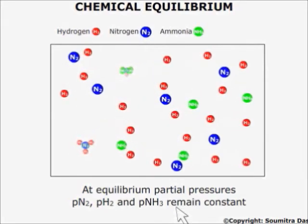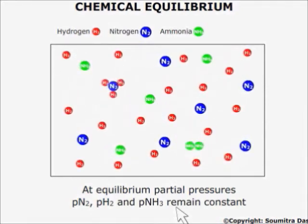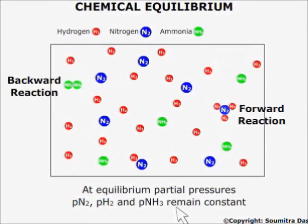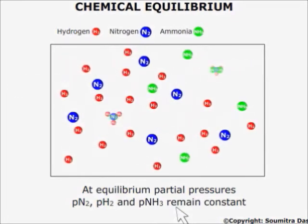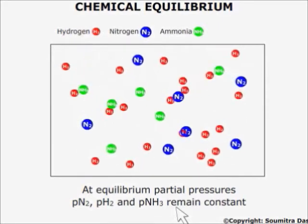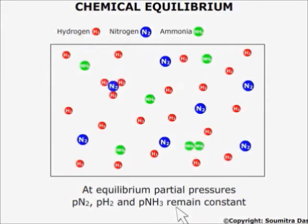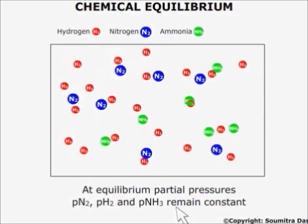But the reaction does not actually stop. What happens is that both the forward and backward reaction take place at the same speed. As soon as one molecule of nitrogen reacts with three molecules of hydrogen to form two molecules of ammonia, at the same time two molecules of ammonia get dissociated. This is therefore called dynamic equilibrium.